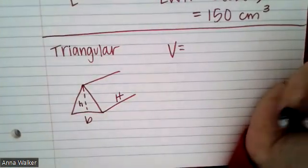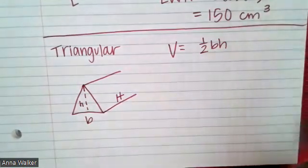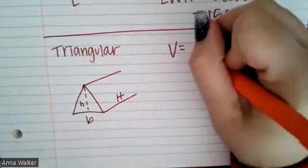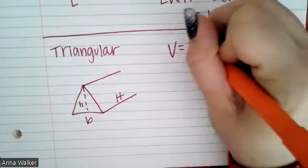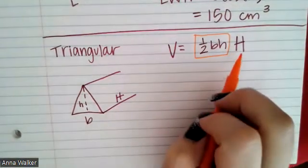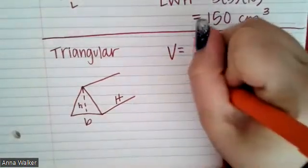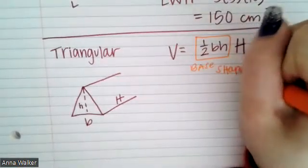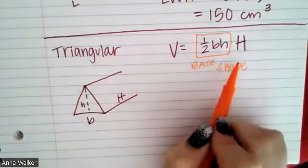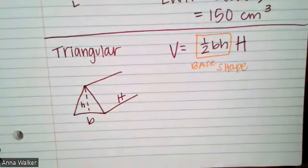To find the area of the base triangle, we use the formula one half base times height. Then we multiply that by the capital H — the height of the prism. Notice that the lowercase h is the height of the triangle, and the capital H is the height of the prism. I put a box around the base shape formula so we remember: area of the triangle times the height of the prism.